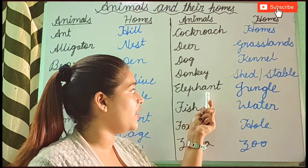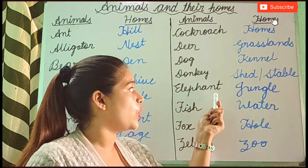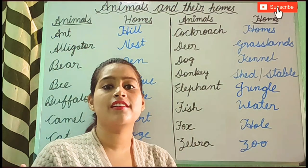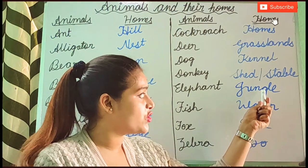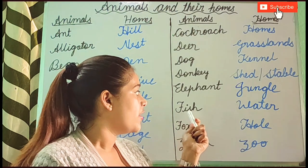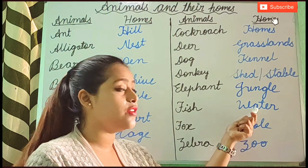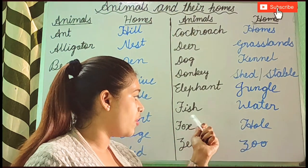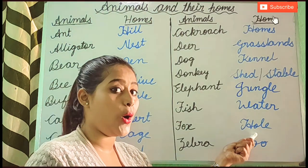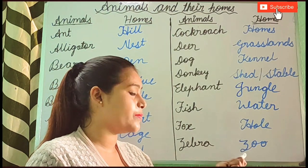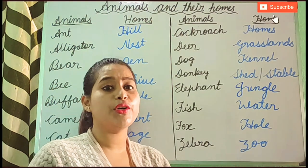Next one is Elephant. Elephant lives in a jungle. Next one, Fish. Fish lives in water. Fox. Fox lives in a hole. Zebra. Zebra lives in zoo.